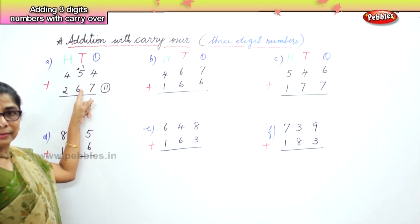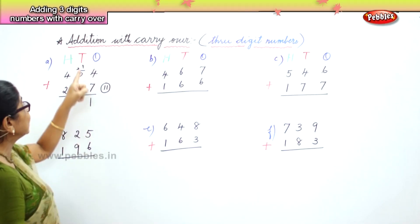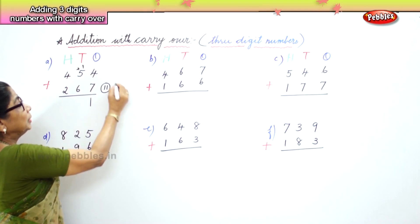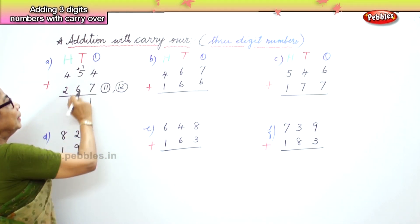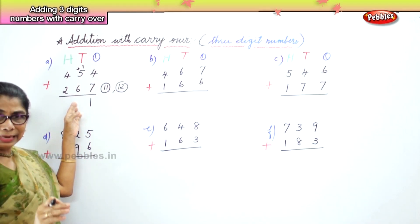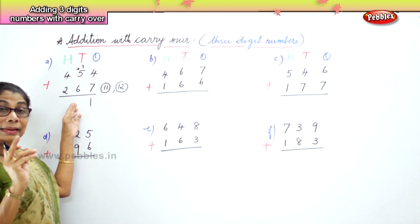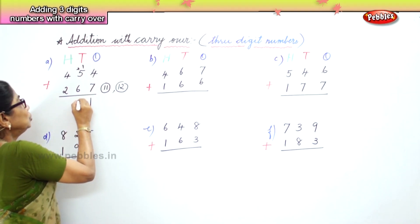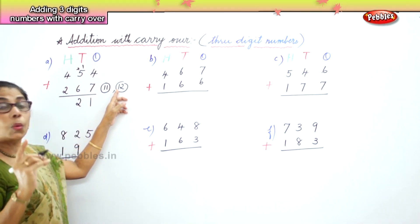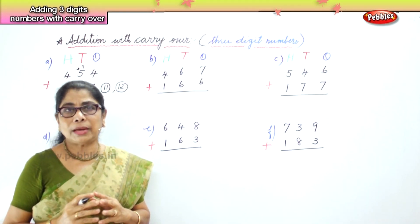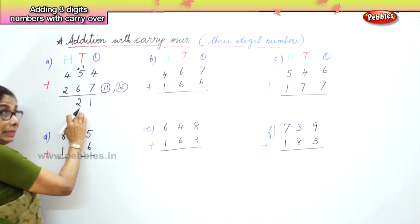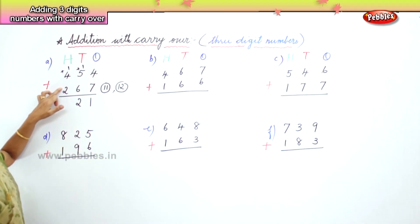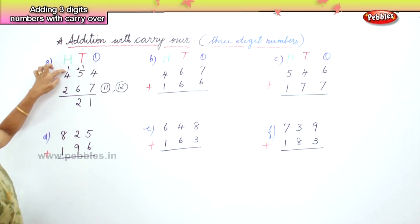Now in the tens place: 5 tens plus 6 tens is 11 tens, plus the 1 carried over makes 12 tens. 12 tens is 2 tens and 1 hundred to carry over. So you put 2 in the tens place and carry 1 to the hundreds place. Then 400 plus 200 is 600, plus 100 carried over is 700.